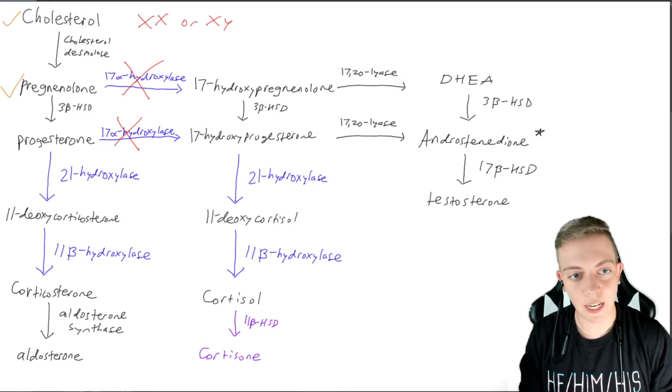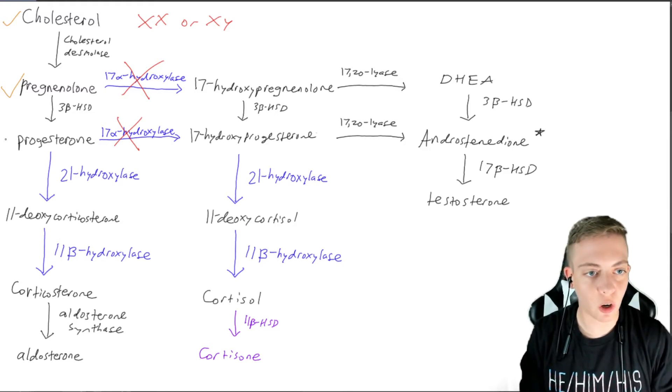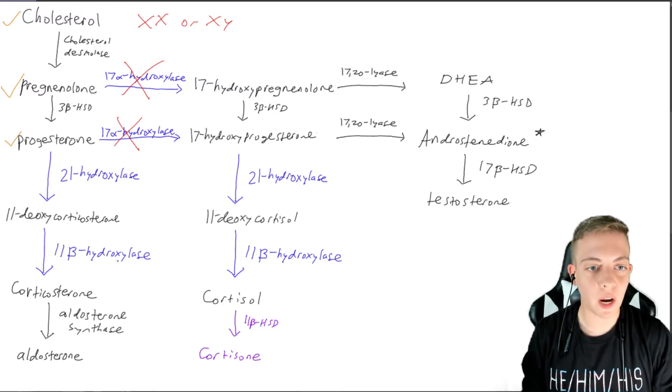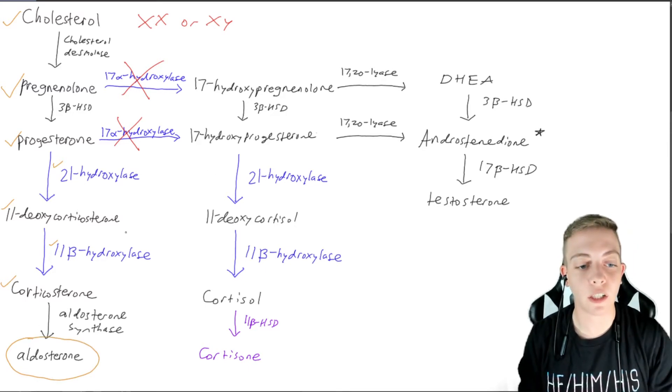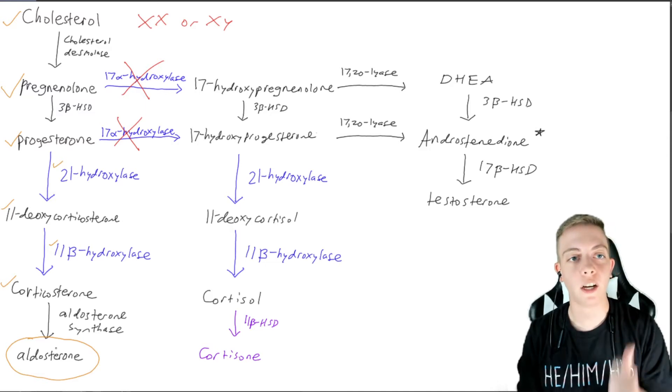We have cholesterol, we have cholesterol desmolase, so we are going to make pregnenolone. We have 3-beta-HSD that is functional, so we are going to produce progesterone. And the rest of this pathway is okay. We have all of these. So we can go through all the way to aldosterone. So unlike the last two pathways where we had no aldosterone, we do have aldosterone.